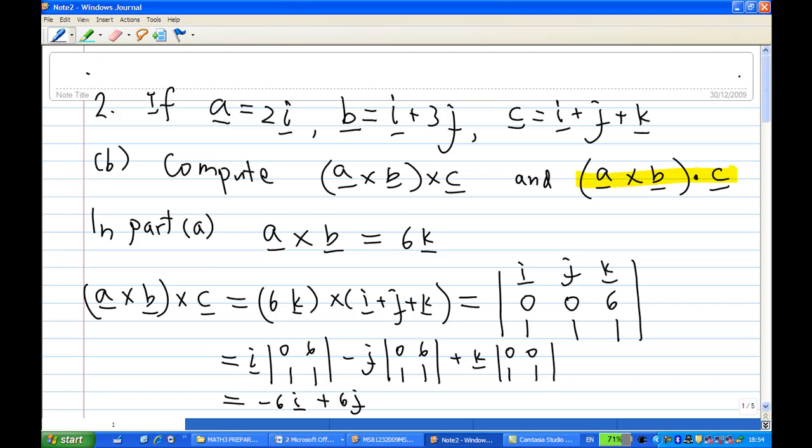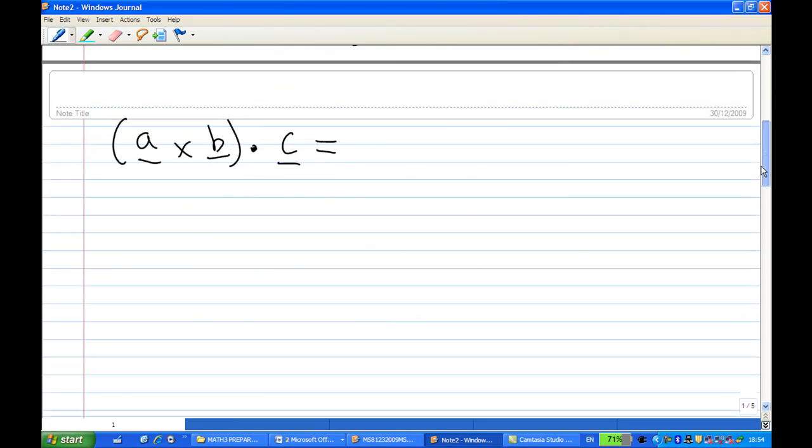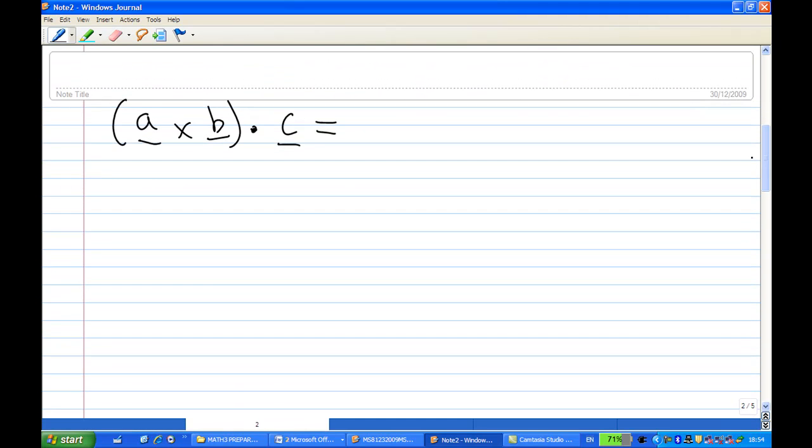Now for the second one, we're going to find out what is a cross b dot c. To find out what is this value. So a cross b dot c, remember a cross b is 6k.